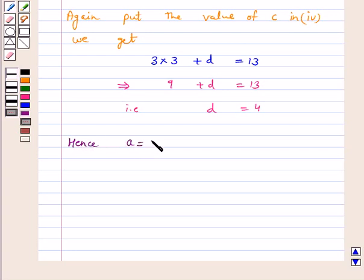Hence, A is equal to 1, B is equal to 2, C is equal to 3, and D is equal to 4 is our answer.